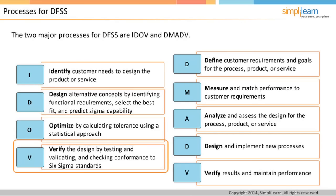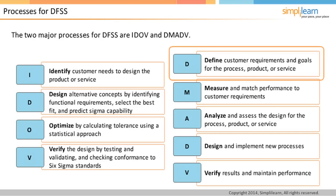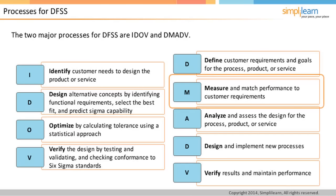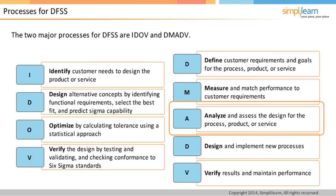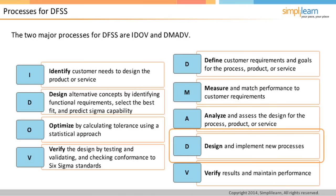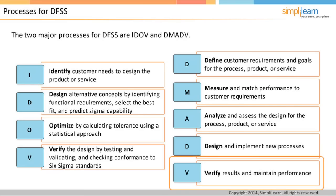DMADV stands for Define, Measure, Analyze, Design, and Verify. The first stage is to define customer requirements and goals. Next, measure and match performance to customer requirements. The third stage involves analysis and assessment of the design. The next step is to design and implement the required processes for the new product or service. The final stage is to verify results and maintain performance.